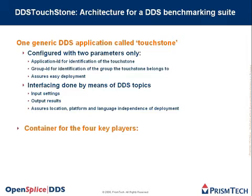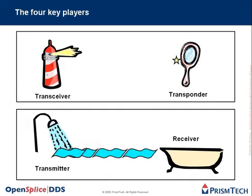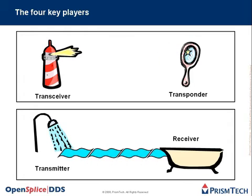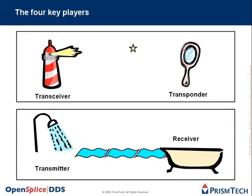The Touchtone application is the container for four key players: transceiver, transponder, transmitter, and receiver. Transceivers and transponders appear in pairs and have a ping-pong communication, which makes it possible to measure latency and jitter. Transmitters and receivers also appear in pairs and are responsible for measuring throughput and efficiency; they are also used for determining discovery times. Any number of pairs can run simultaneously, and a scenario describes which transceivers, transponders, transmitters, and receivers have to be created in which Touchtone application — making it easy to create any scenario you want.